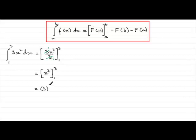So 3³ is 27 and 1³ is 1. So we've got 27 take away 1, which is 26. So that is the answer to our definite integral.